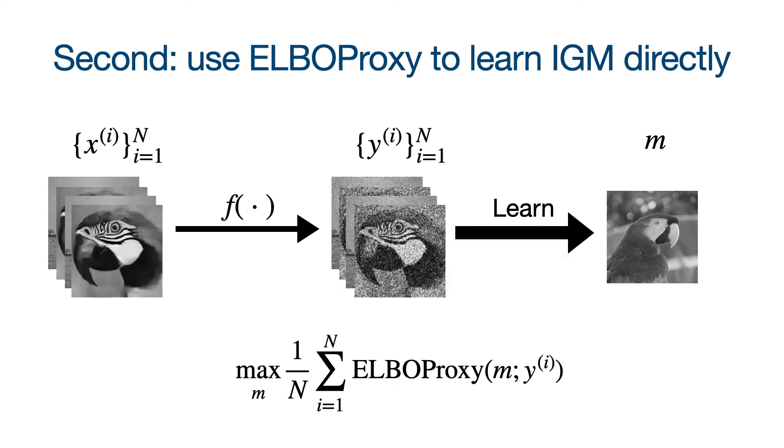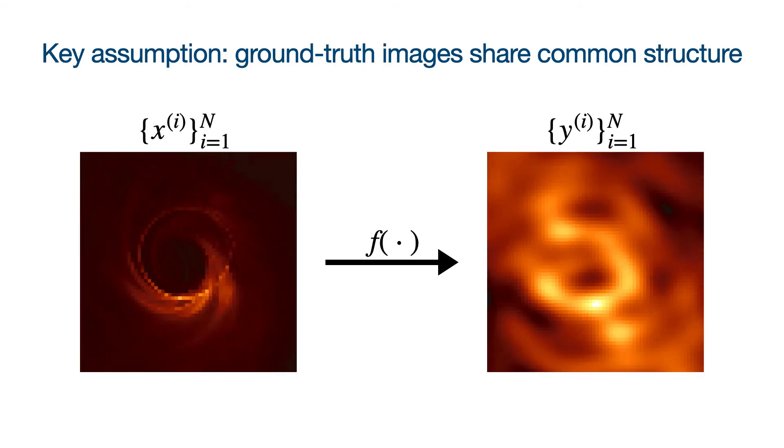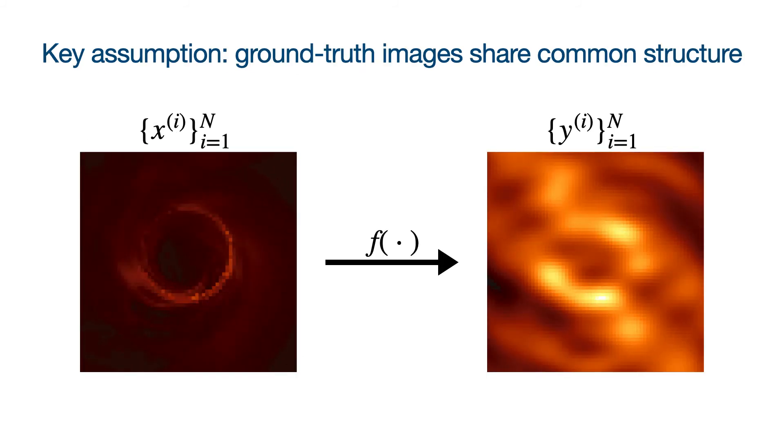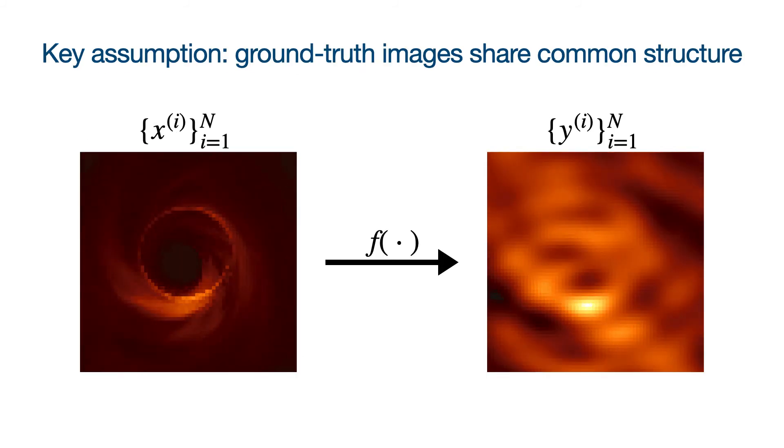Building off of this, we show how to solve inverse problems by optimizing the ELBO proxy to directly learn the image generation model from noisy measurements alone. The key structural assumption we make is that the underlying ground truth images we aim to reconstruct share common structure.